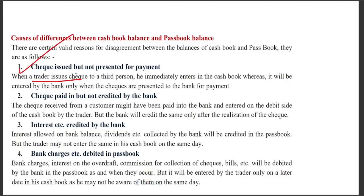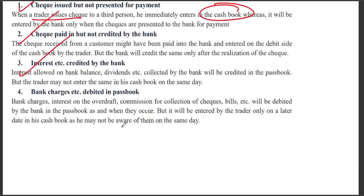If a cheque has been issued but not yet presented to the bank for payment, it will appear in the cash book but not yet in the passbook, causing a difference. Another cause is a cheque paid in but not yet credited by the bank.